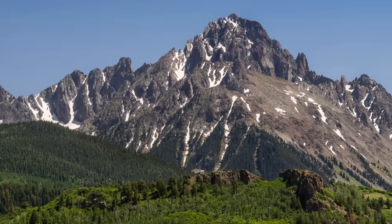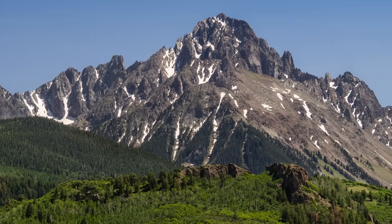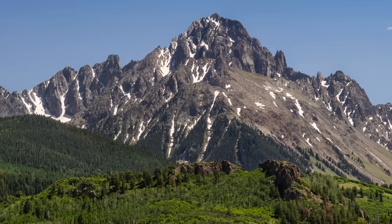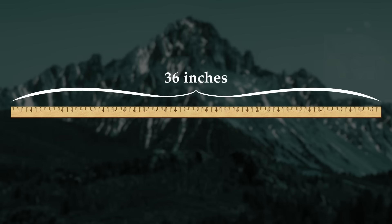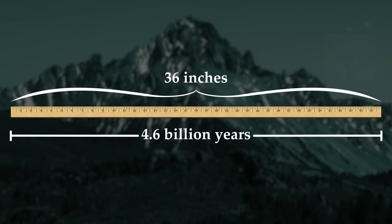One way to try to understand the scale of geologic time is to relate it to something more familiar. Let's look at two examples. First, we'll use a yardstick to represent the entire history of the planet Earth. A yardstick is 36 inches long. The Earth is about 4.6 billion years old, so each inch on the yardstick represents about 128 million years.